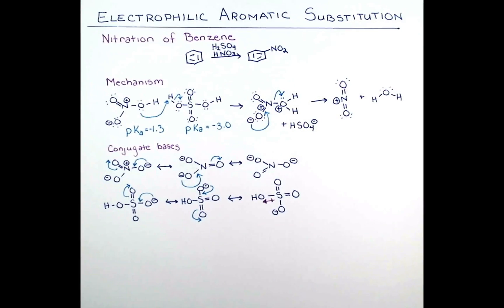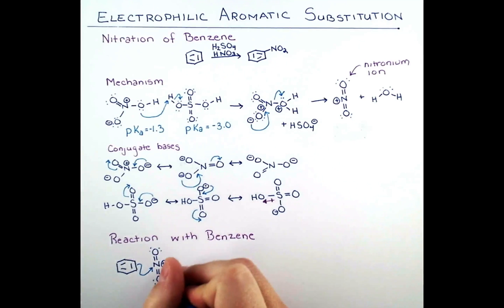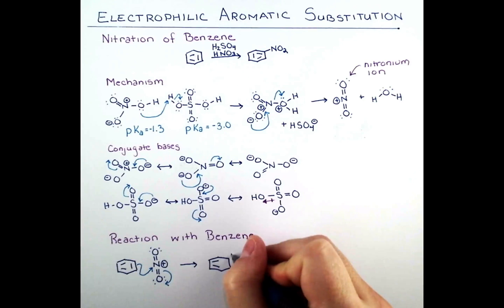Elimination of the leaving group gives the nitronium ion and a molecule of water. Now the nitronium ion is a powerful electrophile, and so benzene will open up its double bond and attack it. Now we have a carbocation on benzene that needs to be neutralized.